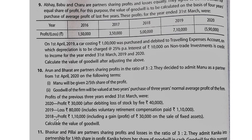For 2020, profit of 30,000 is given after debiting loss by fire — loss by fire is an abnormal loss, not an actual loss, so add it back (plus). For 2019, profit of 80,000 is given including voluntary retirement compensation paid of 1,10,000. Voluntary retirement is not a regular/normal expense — a person retires after 30-40 years of service, it doesn't happen every year. So this is not an actual expense and must be added back (plus). For 2018, profit includes abnormal gain of 30,000 — abnormal gain is not actual income, so subtract it (minus).